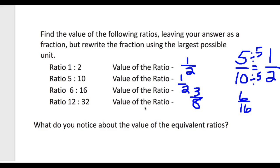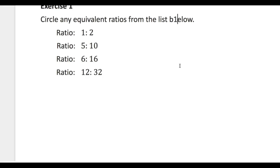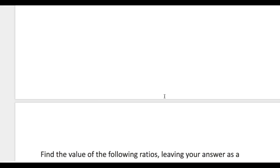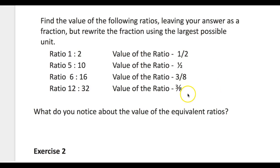What about the last one? What's the value of the ratio of 12 to 32? You should have found that 12 to 32, written as 12 over 32, can be reduced to three-eighths because you divided both of them by 4. So in fraction form, the value of one-half would look like that on the document, and 6 to 16 gave us three-eighths, and 12 to 32 also gives us three-eighths.